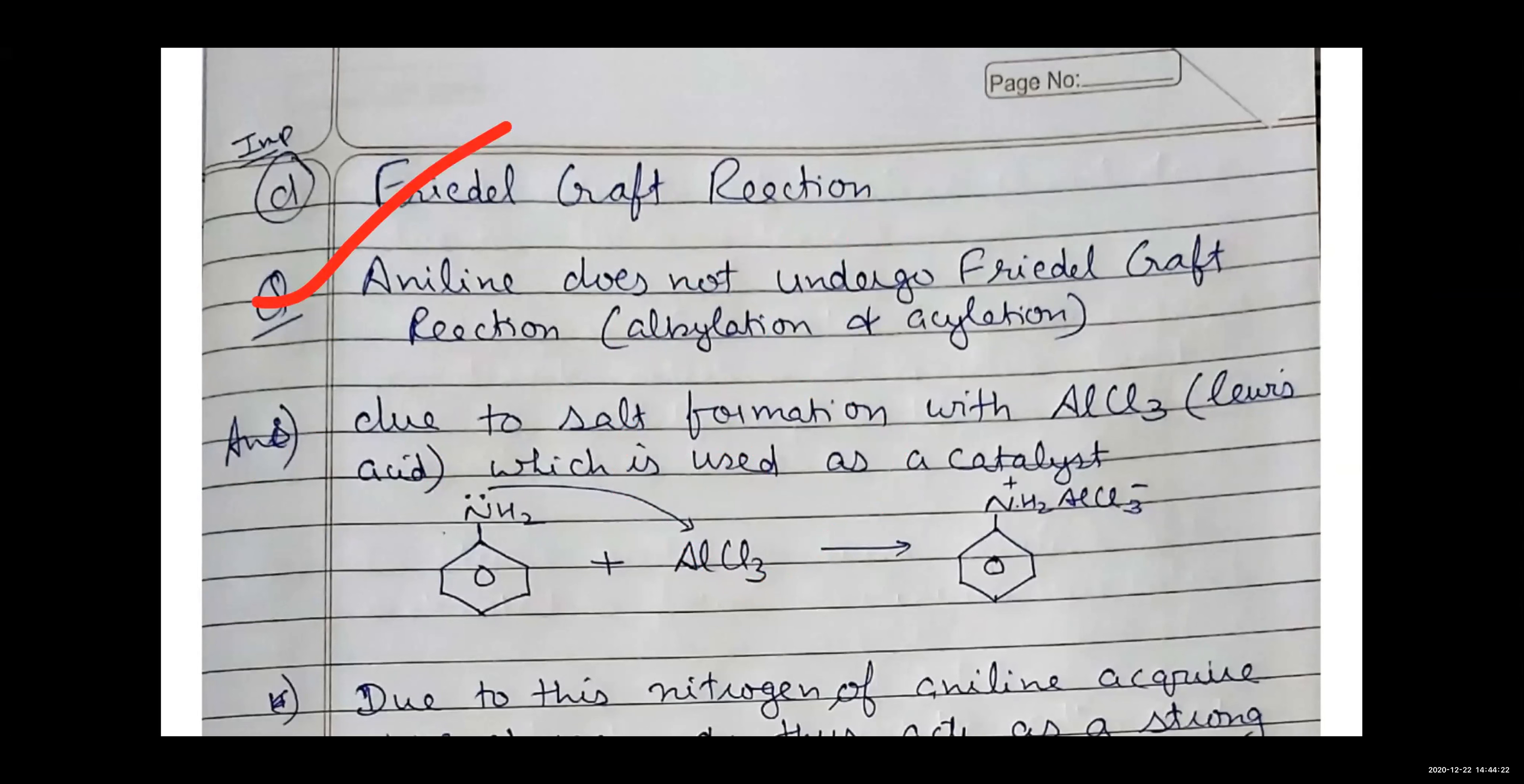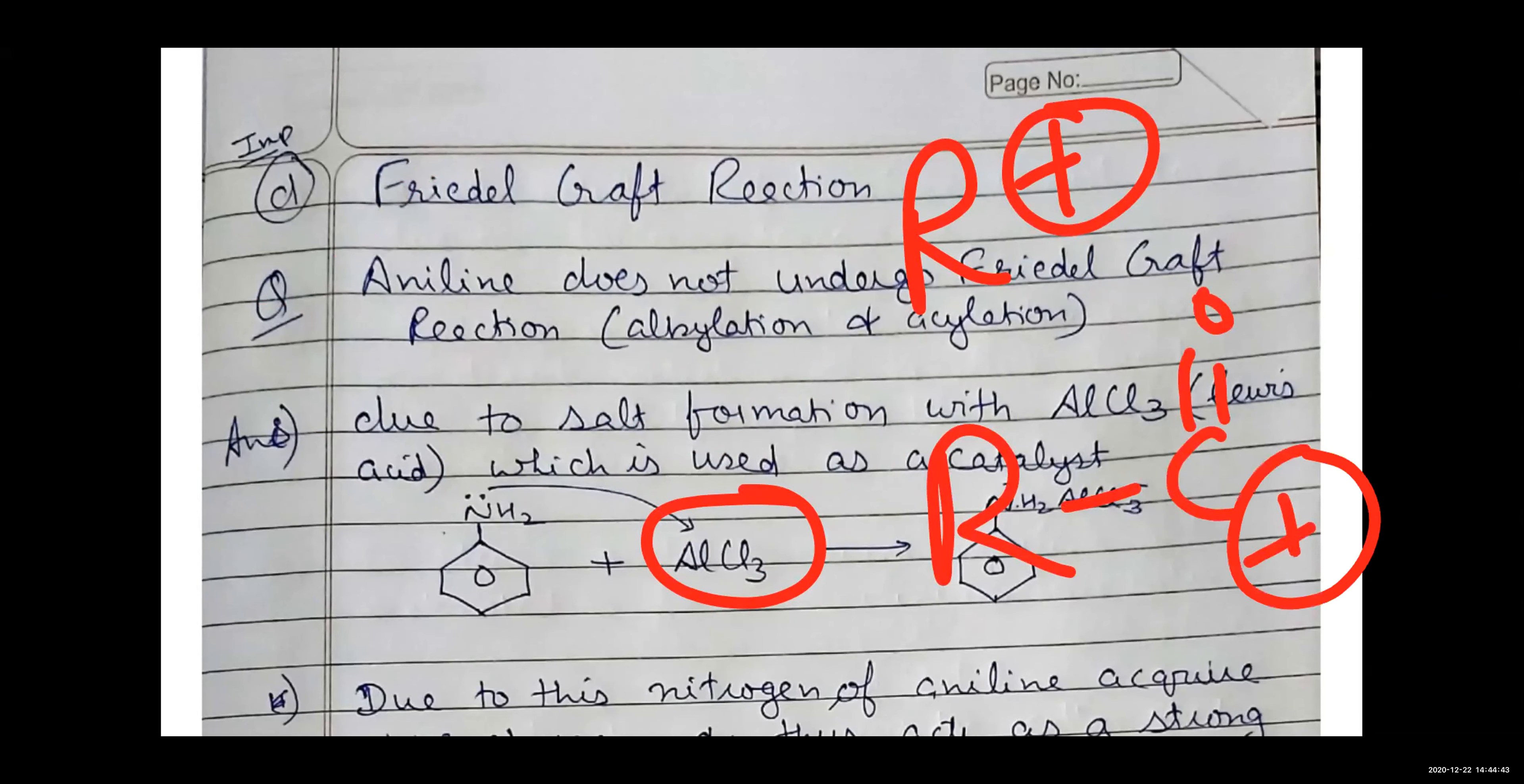It will be the cause of that. What happens? The Friedel-Craft reaction is that we use aluminum chloride as a catalyst. We use aluminum chloride to generate the electrophile. What does aluminum chloride do? R plus or RCO plus. It means that it generates the electrophile.